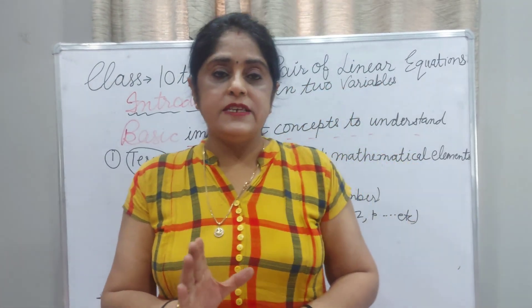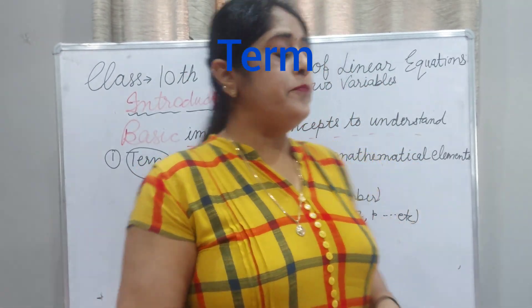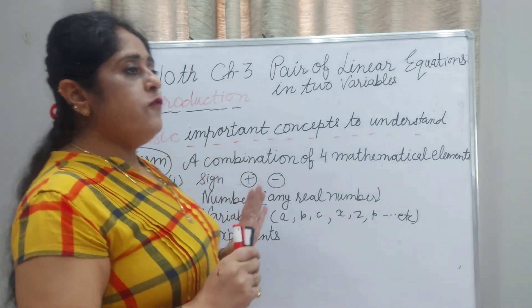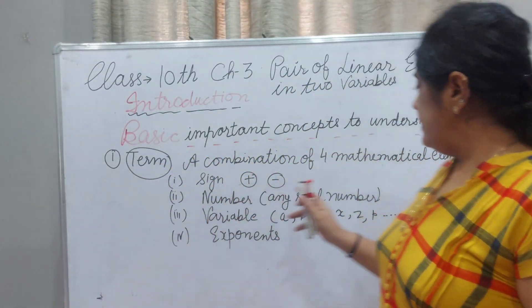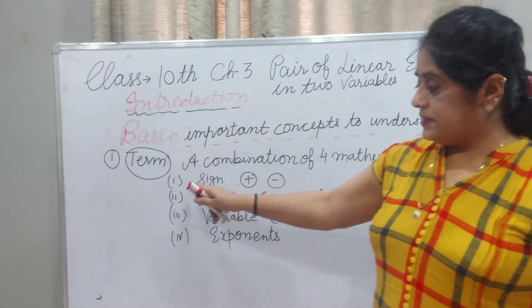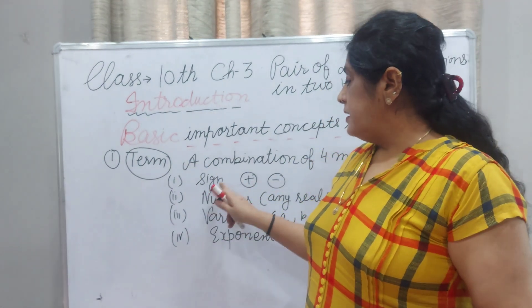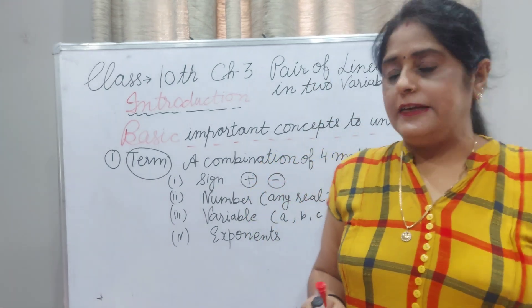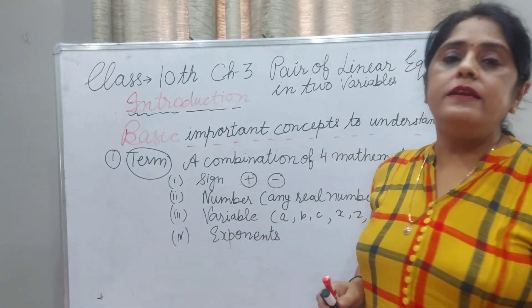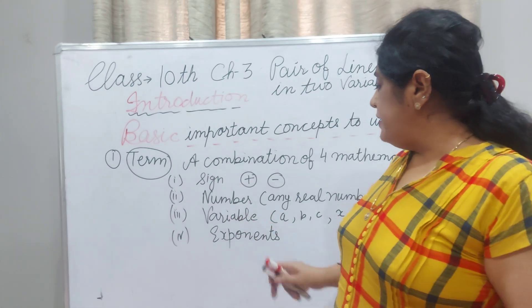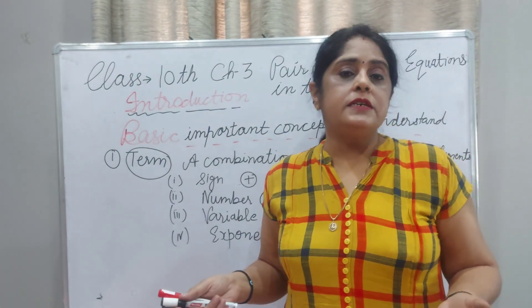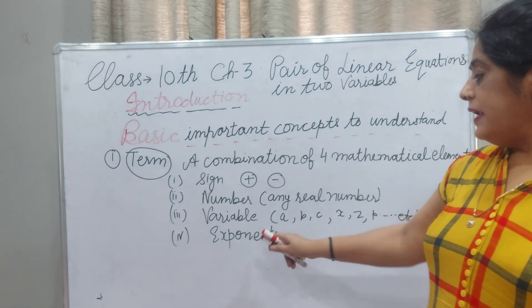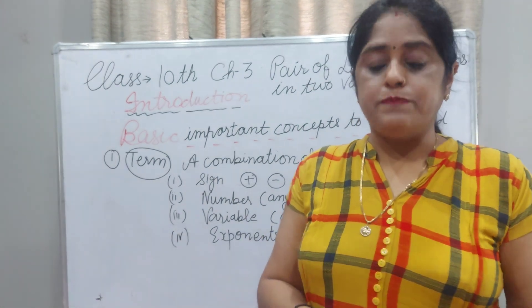Now first, let me tell you the basic concept of a term. A term is a combination of four mathematical elements. First, which is necessary, is a sign — either positive or negative. Second, a number — any real number. Third, a variable should be there: A, B, C, X, Y, Z, P, etc. And fourth, exponents — exponents means power.